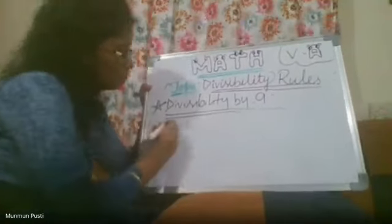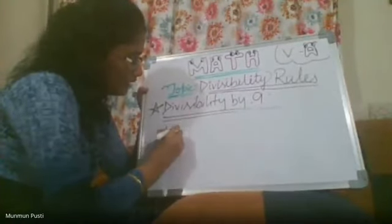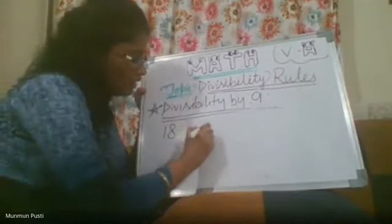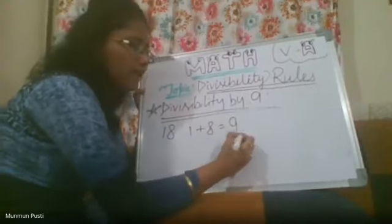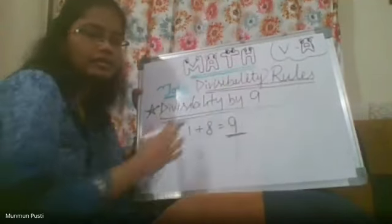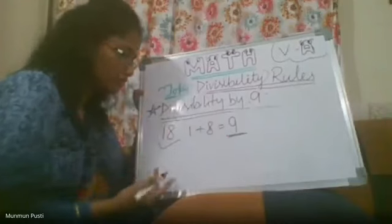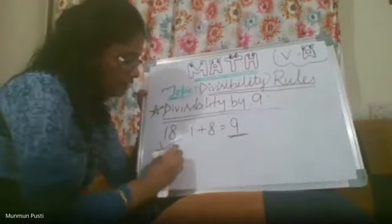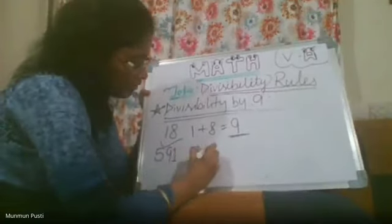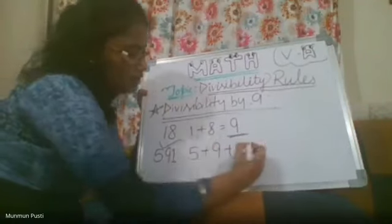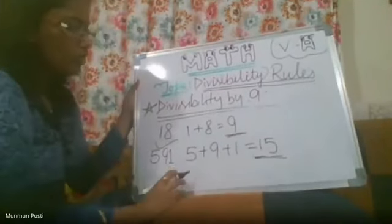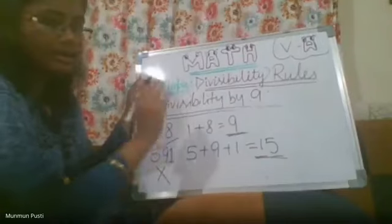For divisibility by 9: we need to add the digits. Suppose we have the number 18 — we add 1 plus 8, which equals 9, and 9 is obviously divisible by 9, so we can say that 18 is divisible by 9. For another number, 591: we add 5 plus 9 plus 1, which equals 15. But 15 is not divisible by 9, so 591 is not divisible by 9.